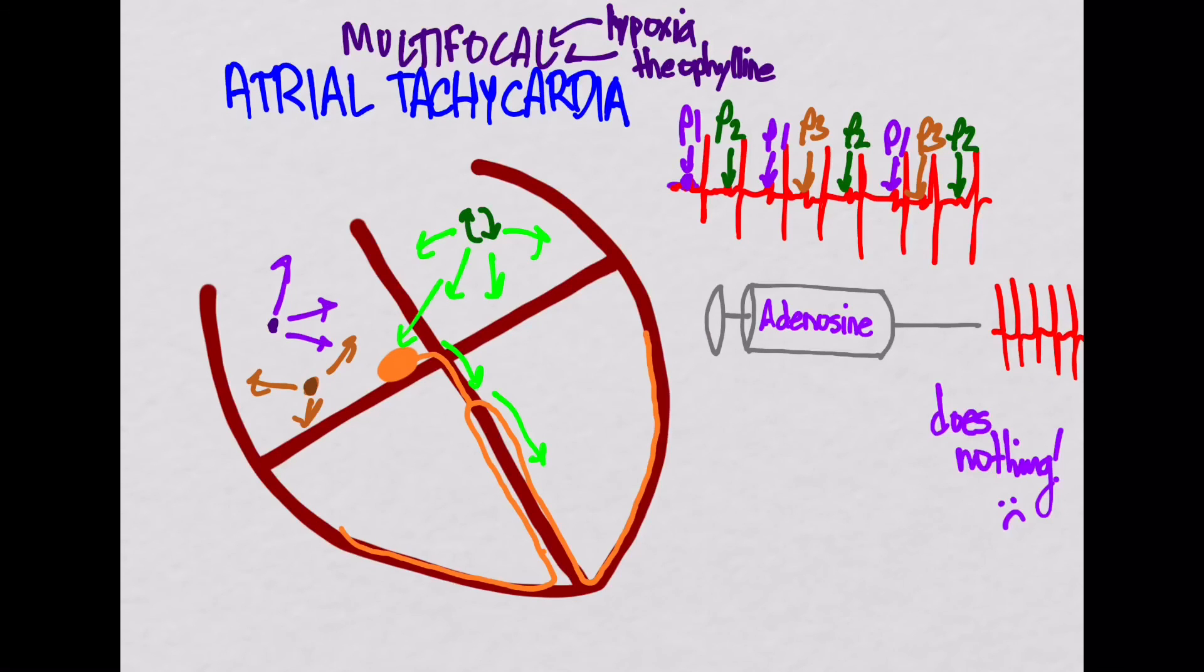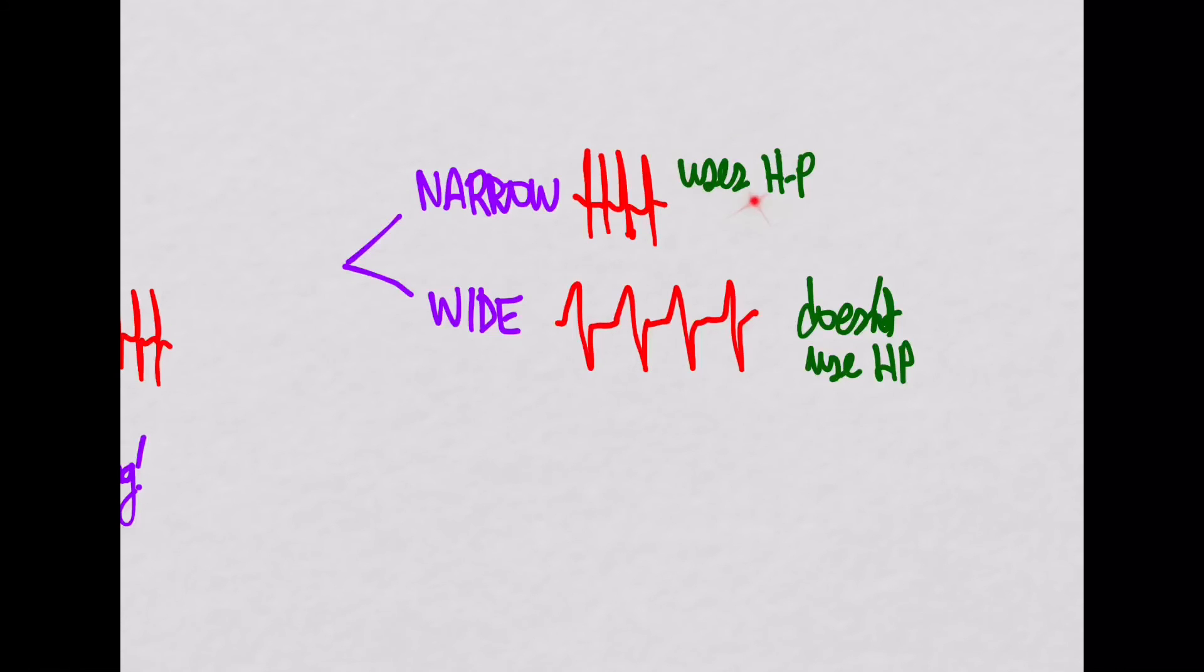The rest of the article then goes on to talk about some of the strategies when approaching this. The first thing being, is it narrow or wide? And of course, it's narrow if it uses the entire His-Purkinje system. If for some reason it leaves that system, it might be wide. And of course, the bypass tract might be one way, or a bundle branch block may be another way that you would get off of that His-Purkinje system.